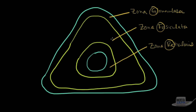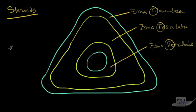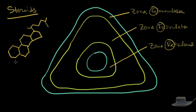Zona glomerulosa, zona fasciculata, zona reticularis — we'll talk about each of these three layers. The adrenal cortex secretes steroid hormones, which is important to know. Unlike protein or peptide hormones, steroid hormones are all derived from cholesterol, which makes them lipid-soluble.